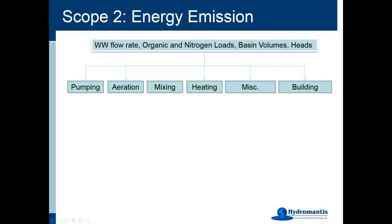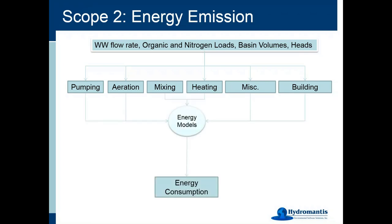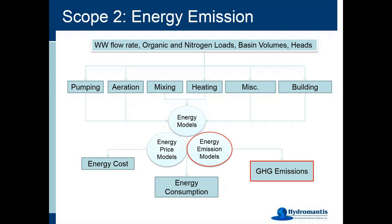For scope 2, we account for energy consumed by pumping, aeration, mixing, heating, miscellaneous, and building energy. Energy models estimate consumption from all these sources. Using our energy pricing model, we can also estimate energy cost, and in Mantis 3 we have energy emission models to estimate greenhouse gas emissions from energy consumption. To apply these models, we need emission factors associated with electricity, and the model has a database of emission factors for different electricity sources.